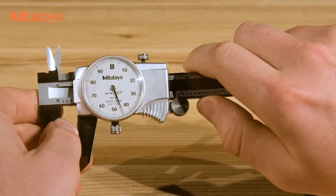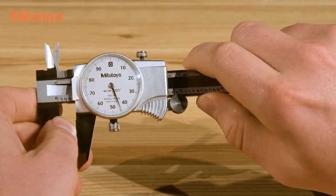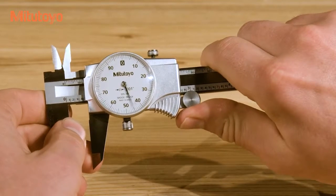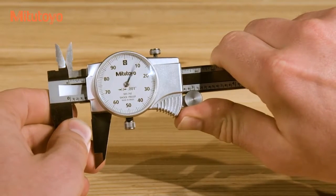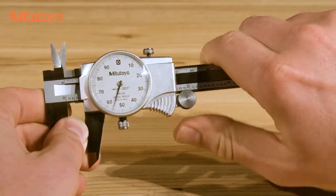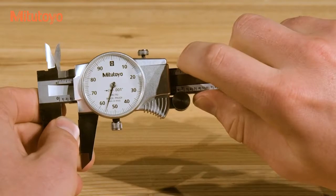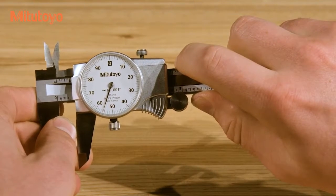If there's confusion about whether or not a graduation has been passed, note that the value on the dial increases as the caliper opens. So if the value is high, then the graduation has not yet been passed, and if the value is low, it has just been passed.